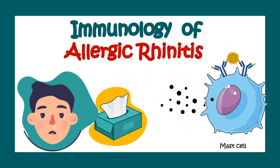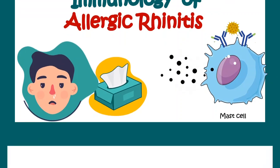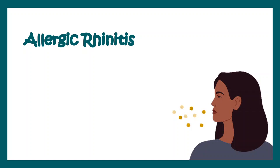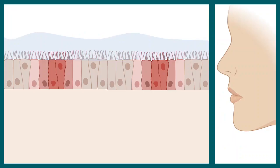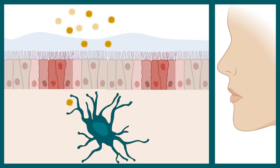Let's try to understand the immunology behind this allergic response. In simple terms, allergic rhinitis is a type 1 hypersensitivity reaction. Zooming into the nasal mucosa, we can see epithelial cells with a thick layer of mucus on top. When an allergen such as pollen grains enters our system, dendritic cells or antigen-presenting cells engulf these pollen grains and display those antigens on MHC class 2 molecules.